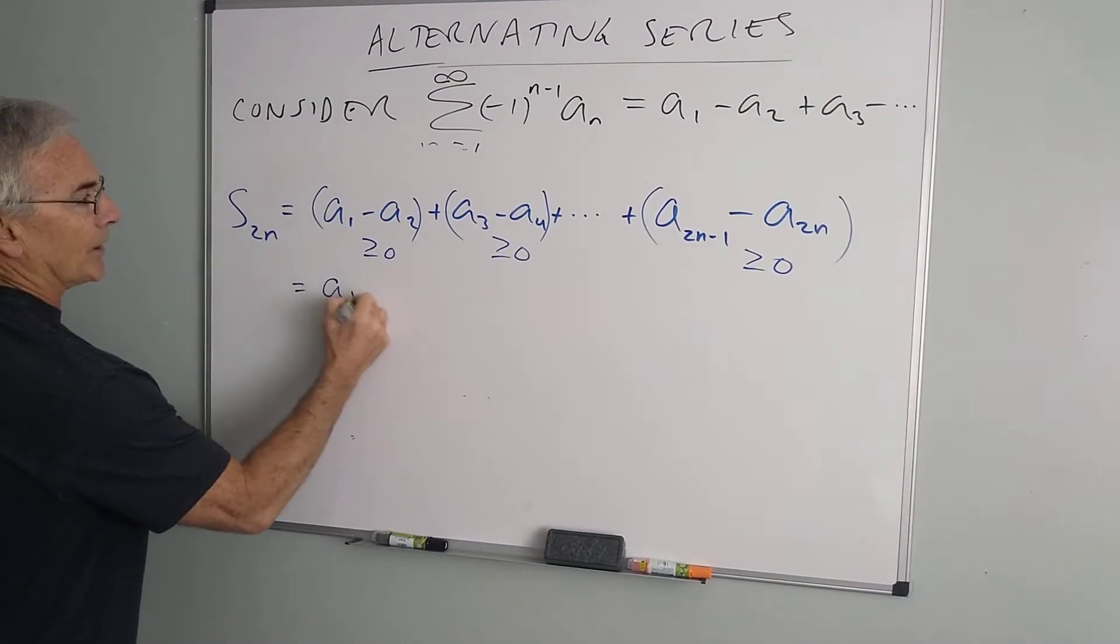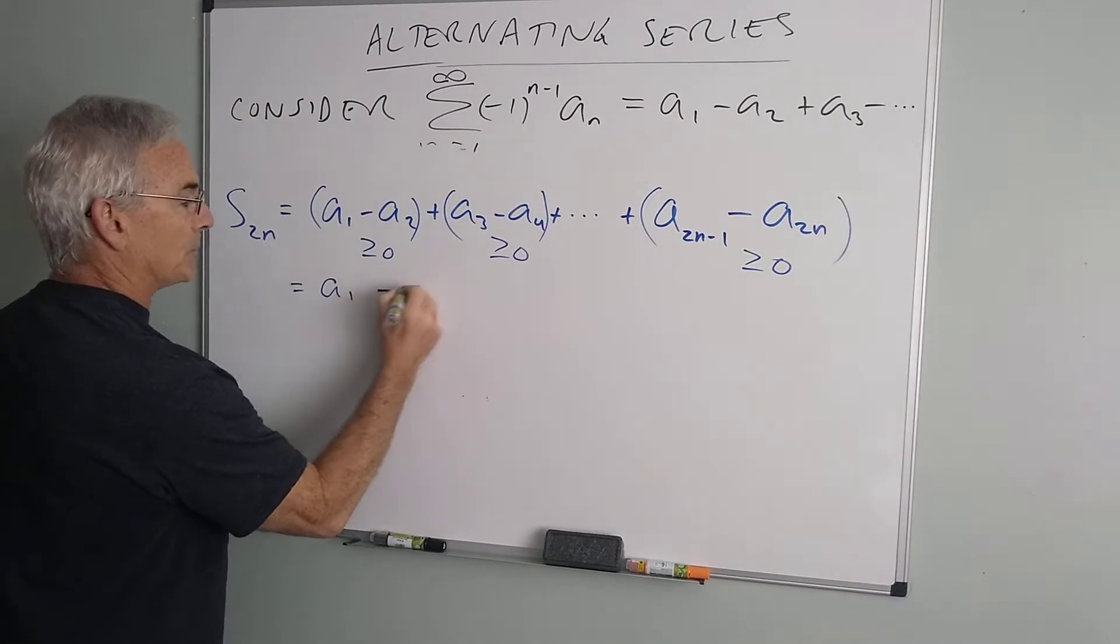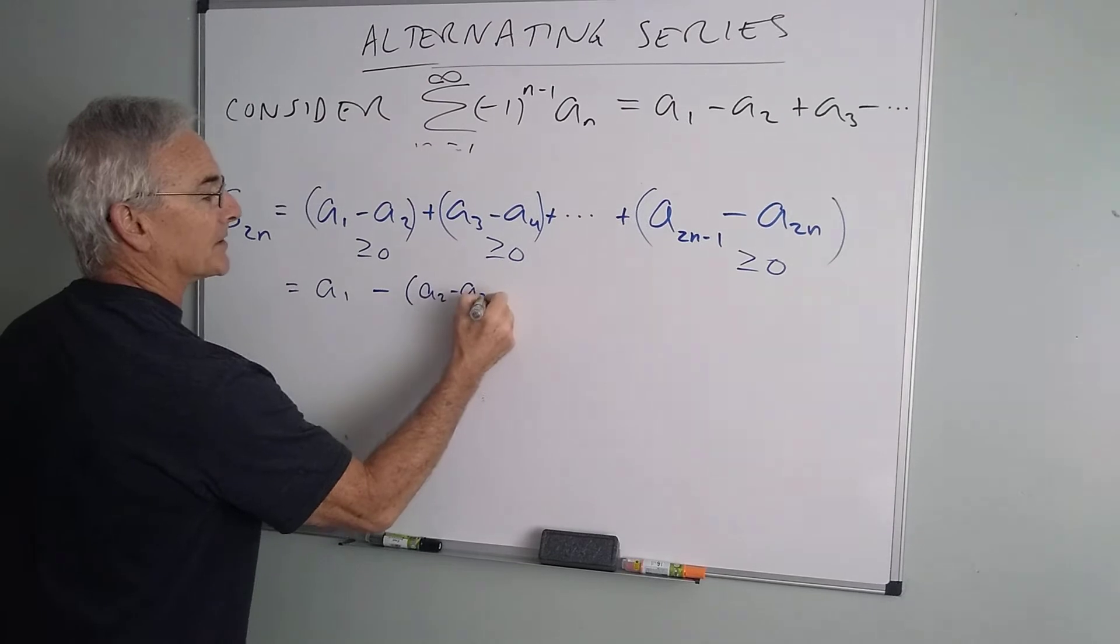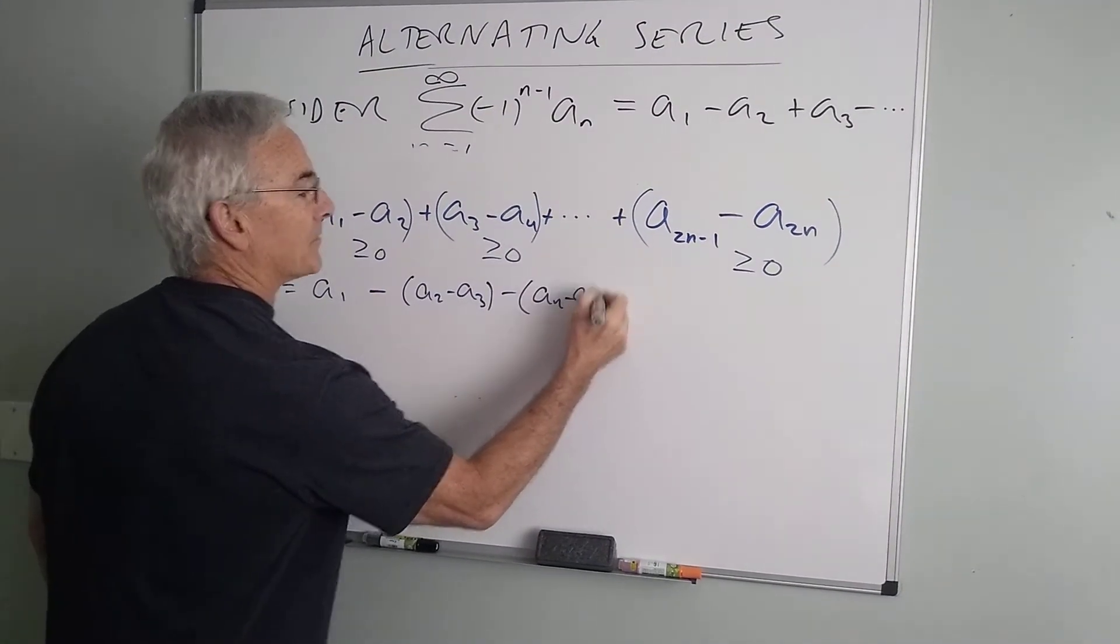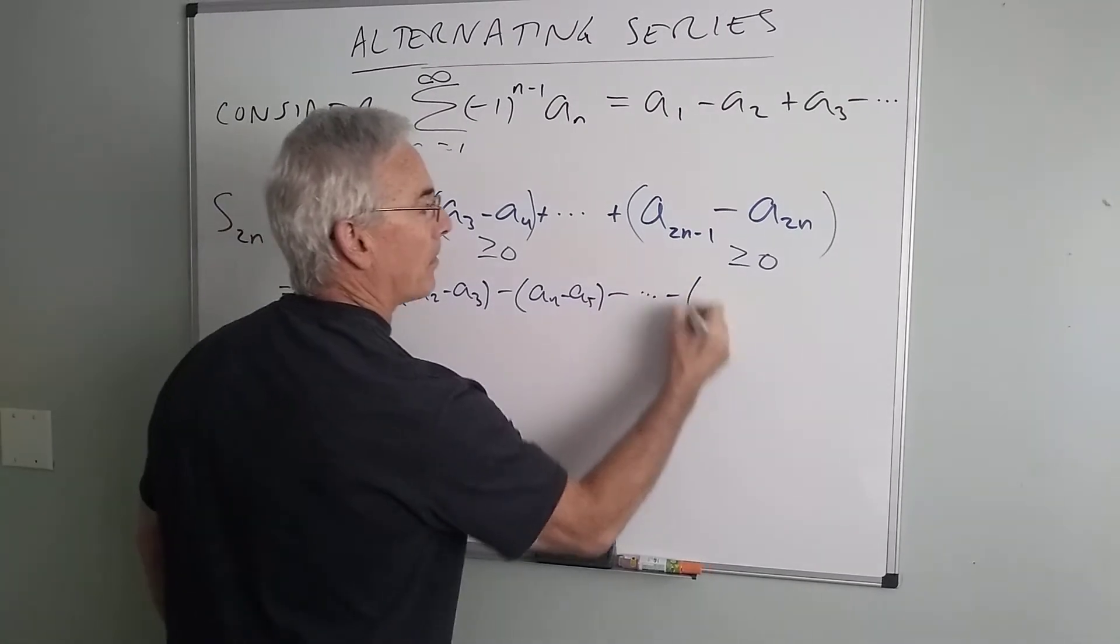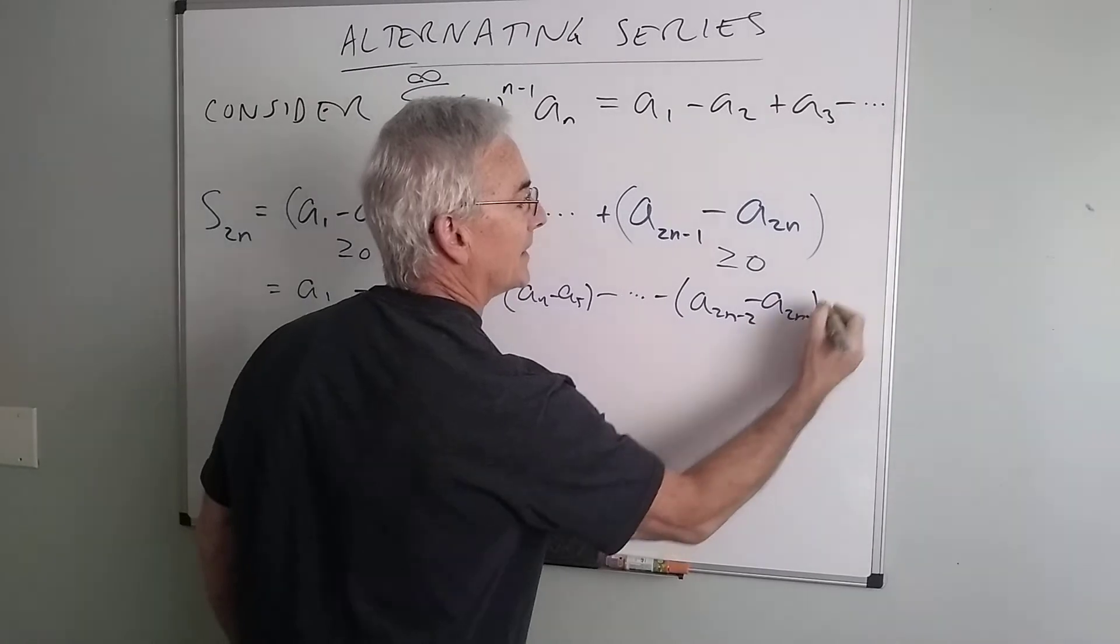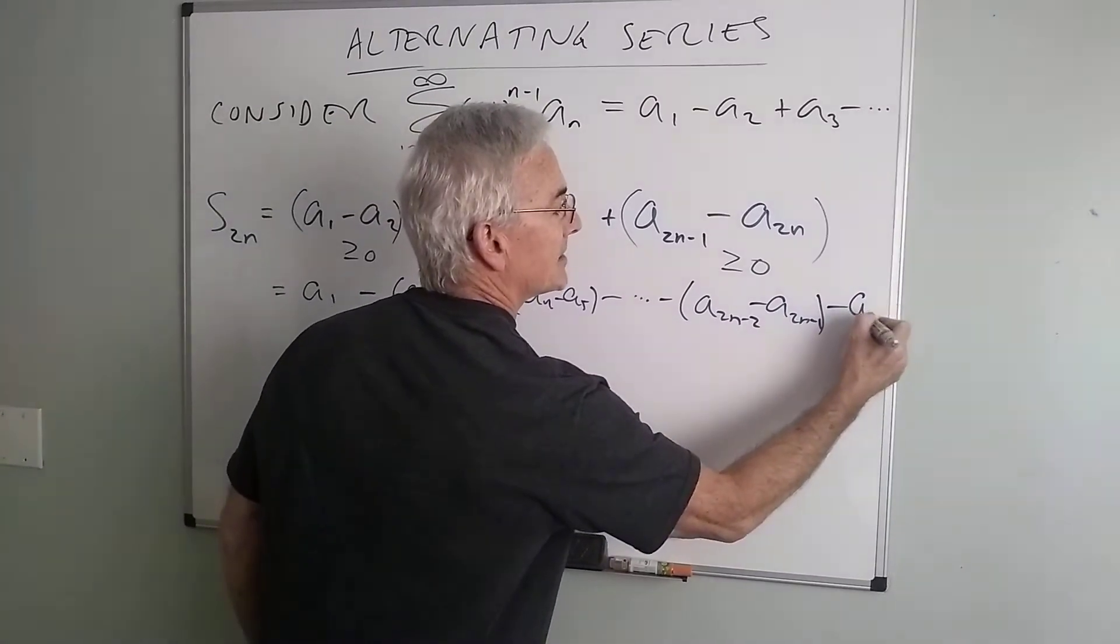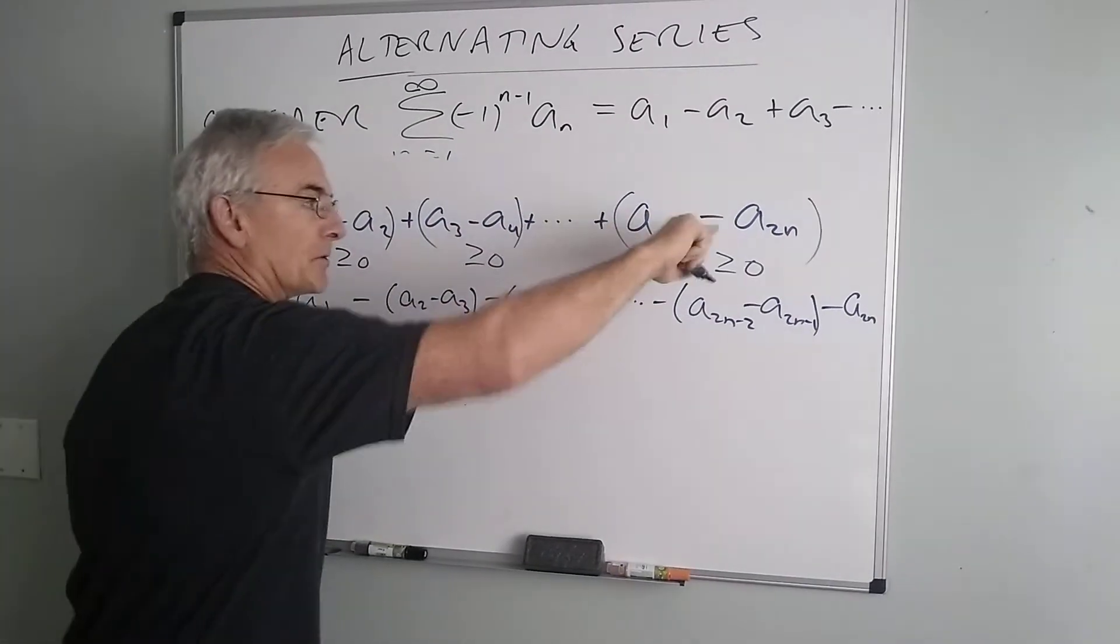Let's write it this way. Let's put the next two together. So minus a2 plus a3 would be minus a2 minus a3 minus a4 minus a5 minus a2n minus 2 minus a2n minus 1, and then finally minus a2n. So if we distribute the negatives, we'll see we'll get the original thing back.